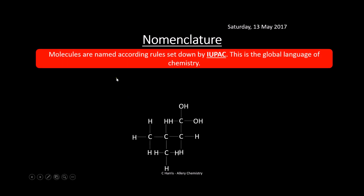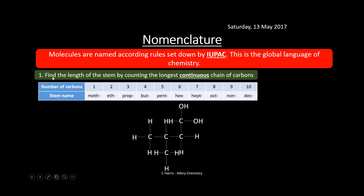Nomenclature is probably one of the most important things you'll do in organic chemistry — being able to name molecules. Molecules are named according to rules set down by IUPAC, the International Union of Pure and Applied Chemistry — the global language of chemistry. The first thing we need to do is find the length of the stem by counting the longest continuous chain of carbons: 1=meth, 2=eth, 3=prop, 4=but, 5=pent, 6=hex, 7=hept, 8=oct, 9=non, 10=dec.